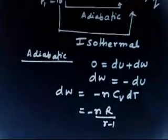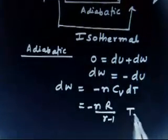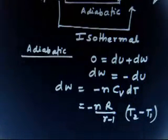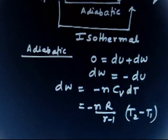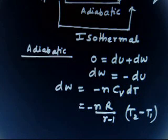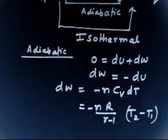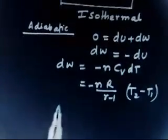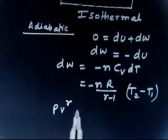Now nCᵥ = R/(γ−1), and dT = T₂ − T₁. I need to express T₂ in terms of volume, since v₂ = v₀/η. The equation of process for adiabatic is pV^γ = constant.